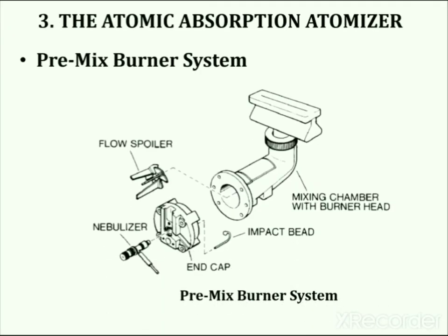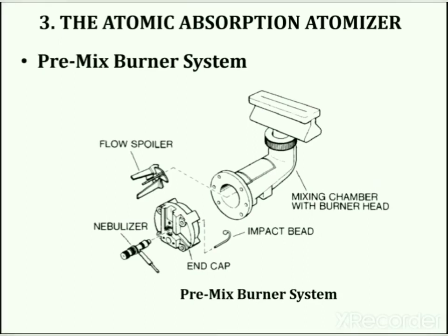The atomizer used in Atomic Absorption Spectroscopy is the premix burner system. The sample cell or atomizer must produce the ground state atoms necessary for atomic absorption to occur, involving the application of thermal energy to break the bonds holding atoms together as molecules. In the premix burner system, the sample solution is aspirated through a nebulizer and sprayed as a fine aerosol into a mixing chamber, where it is mixed with fuel and oxidant gases and carried to the burner head, where combustion and sample atomization occur.